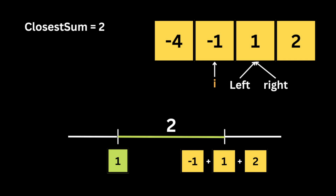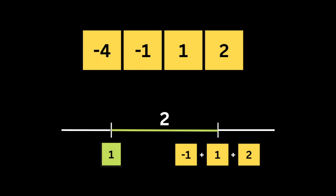We stop the loop because the problem asks us to sum up three numbers, so the outer loop iterates from the first number to the second-to-last number in order to always have three valid pointers. Finally we return the closest sum, which is two for this input example.